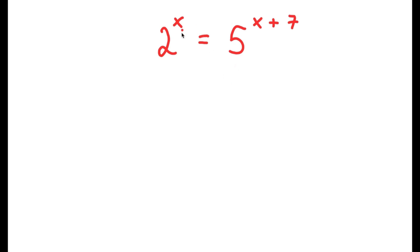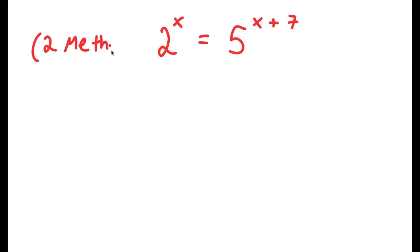Alright, so in this problem I have 2 to the power of x is equal to 5 to the power of x plus 7. I actually have two methods to solve this problem, so make sure to stick around for the video to see me solve both methods.